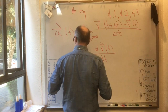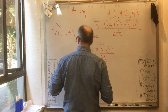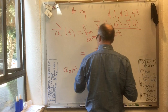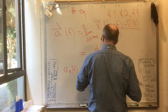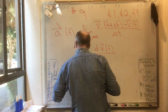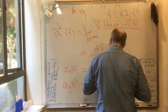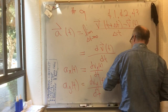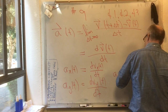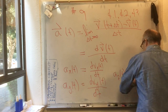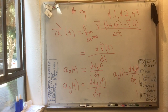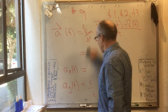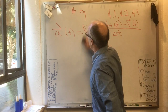Just like before, you have the three components of a. a sub x of t equals dv sub x of t dt; a sub y of t equals dv sub y of t dt; and a sub z of t equals dv sub z of t dt. That totally takes care of section 4.1.